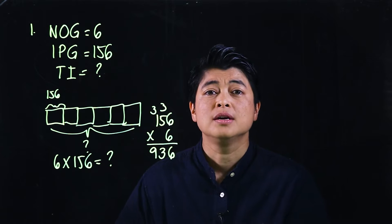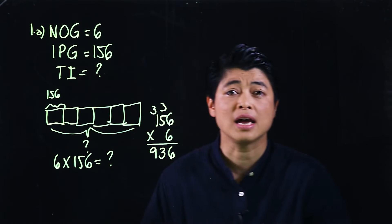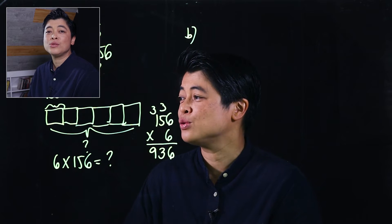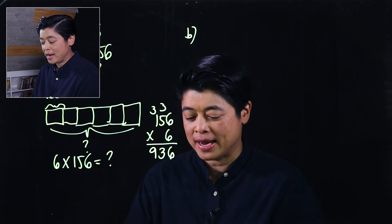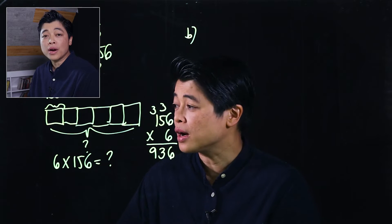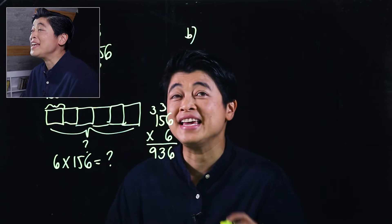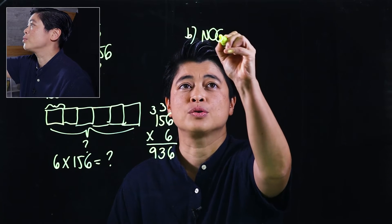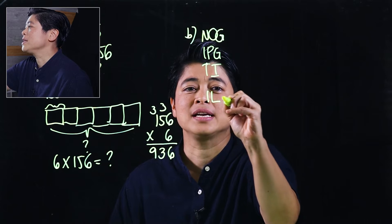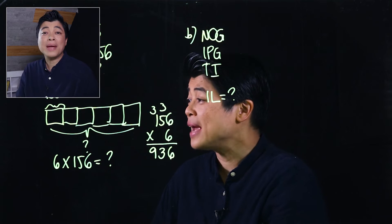Now there's a letter B question. It says she puts the pens equally into seven containers — how many pens did she put in each container, and how many were left? This involves number of groups, items per group, total items, and a remainder, since the last question asks how many were left.